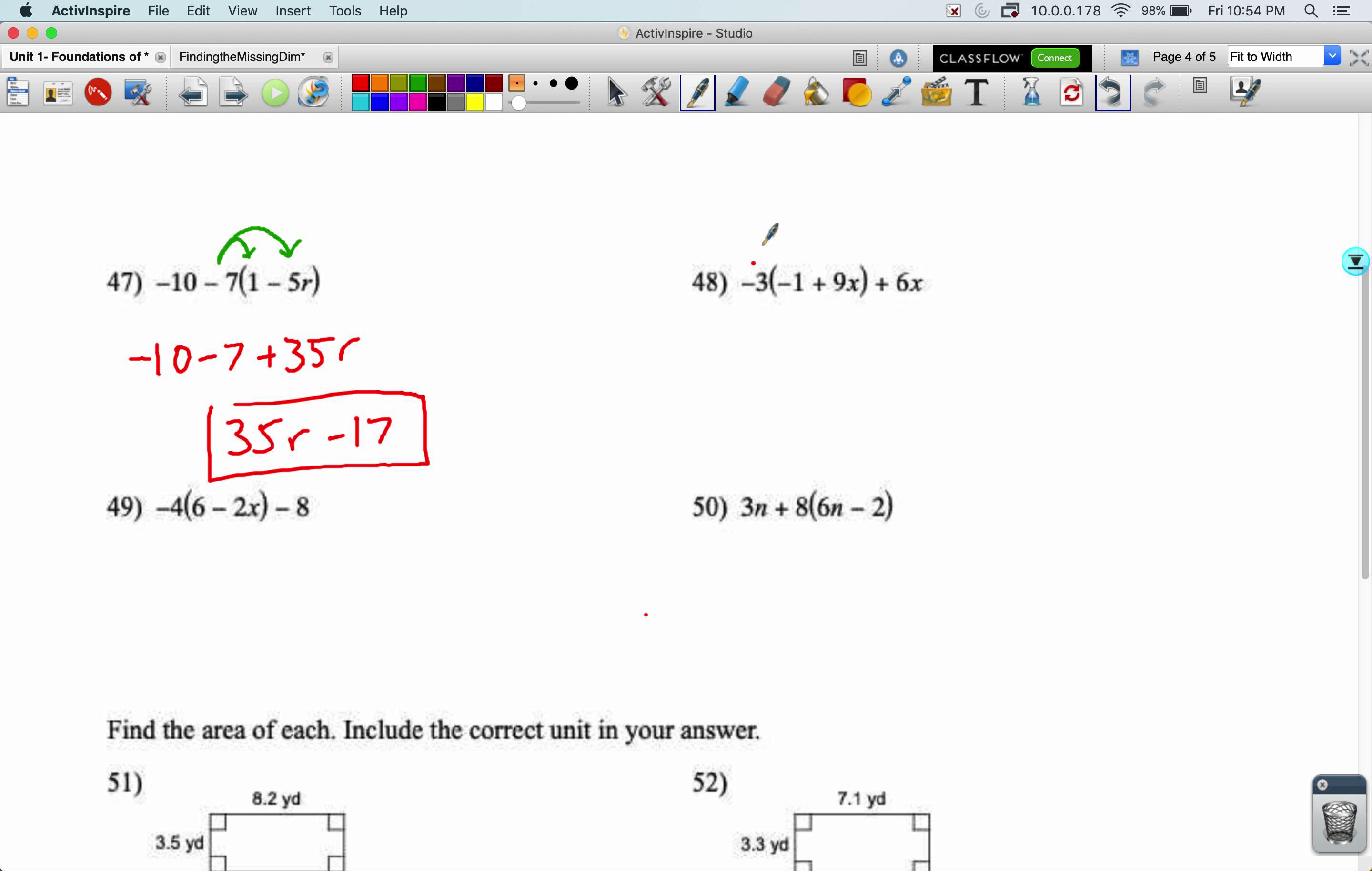Problem number 48. I'm going to distribute in this negative three. I'll get positive three minus 27 X plus six X. Combine these. We get negative 21 X plus three.